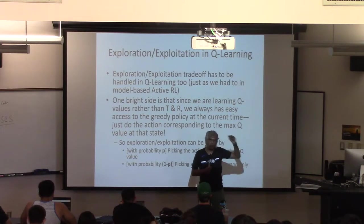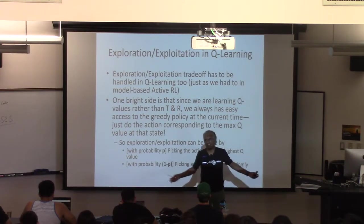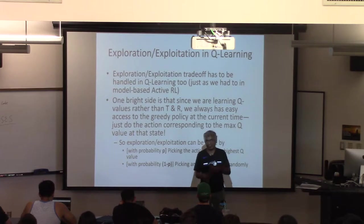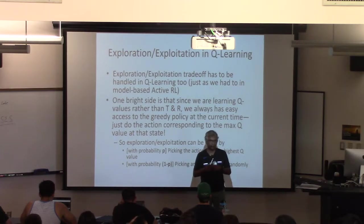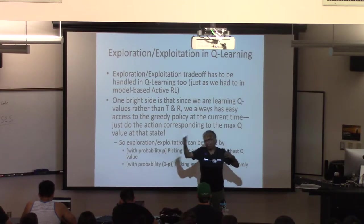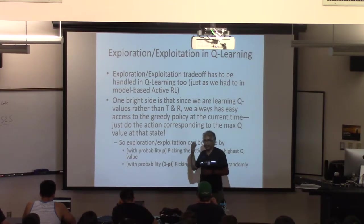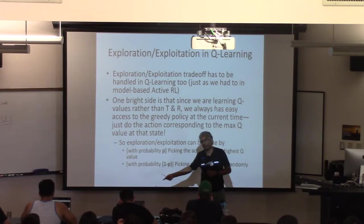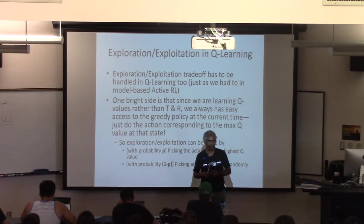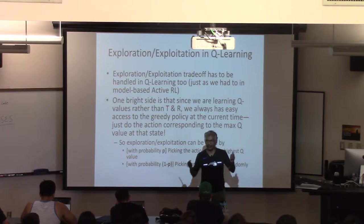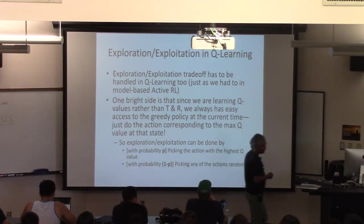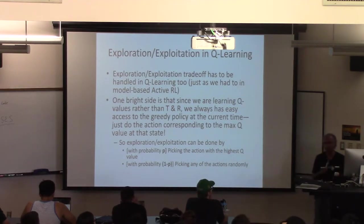With probability epsilon, you pick any of the actions randomly — not just any of the other actions, but any of the actions. Because the random side considers all actions and tosses a coin, so the greedy action can also be picked on the random side. This is Q-learning with exploration, truly.